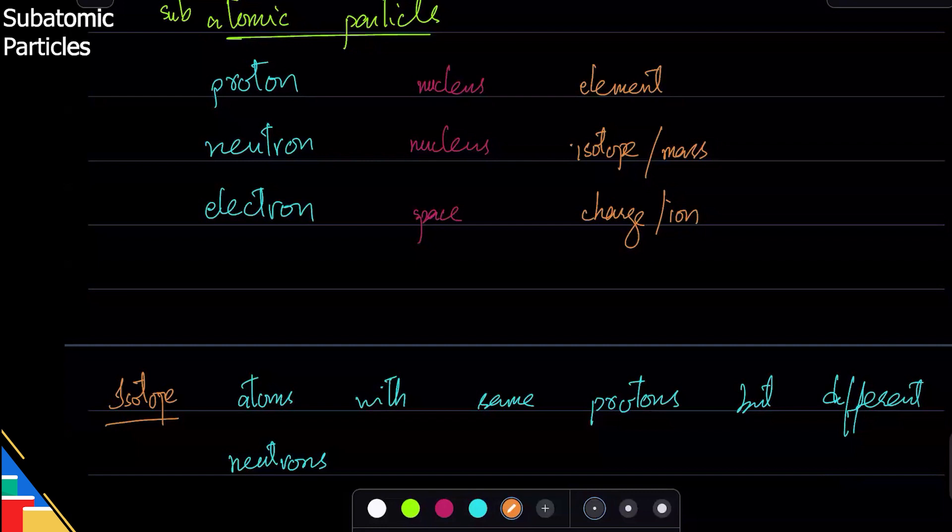So if you change proton, you change element. You change neutron, you change isotope. And if you change electron, you change the charge. What about the masses? The mass is 1, 1, and roughly 0 because we ignore it. It's almost nothing, the mass of electron. We call it relative mass.